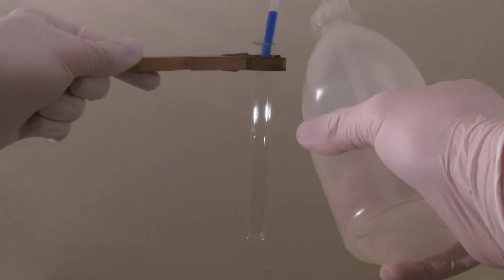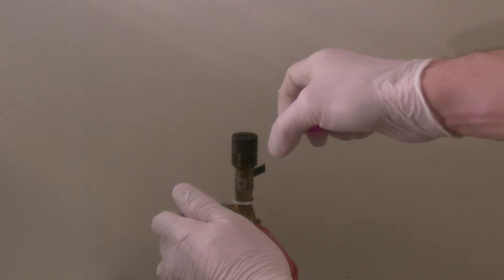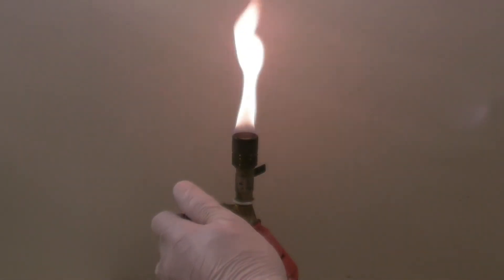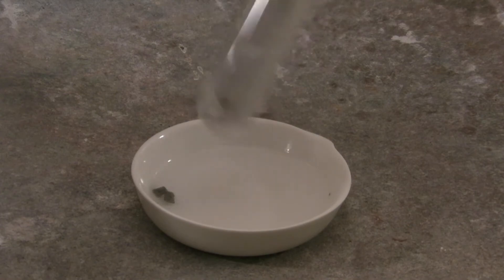The test tube is then filled with water and the Bunsen burner is ignited. Next, the test tube is first held into the solution and then held into the flame of the Bunsen burner.